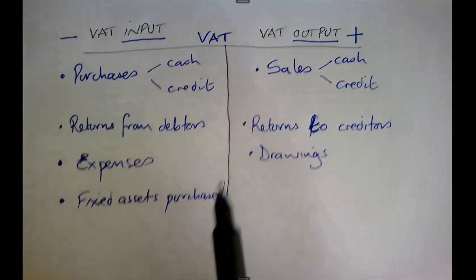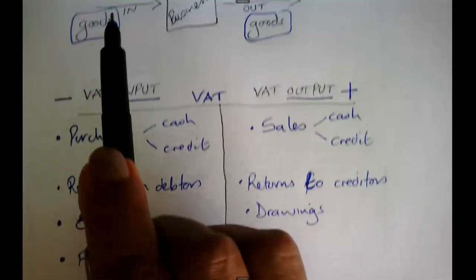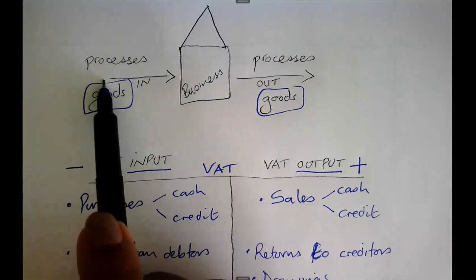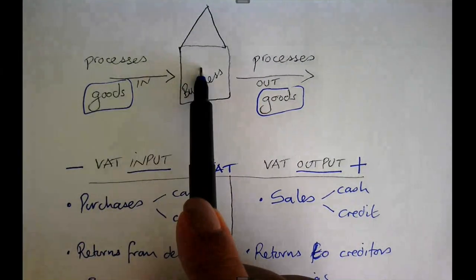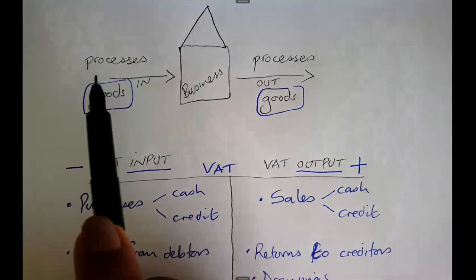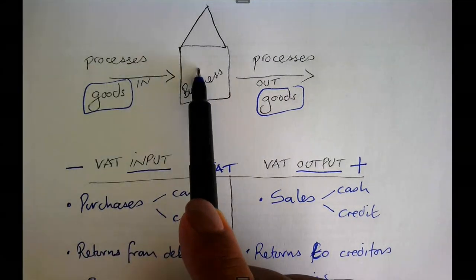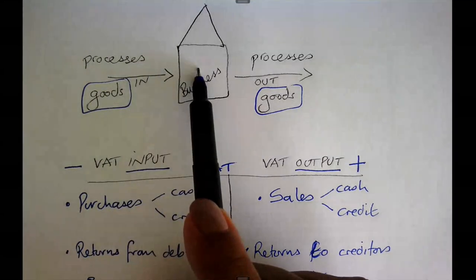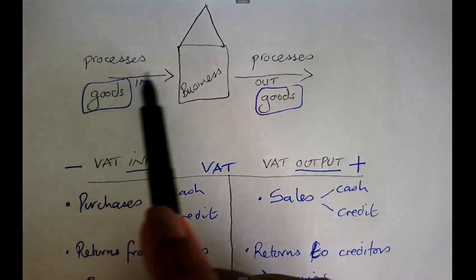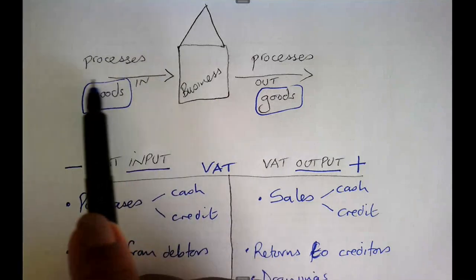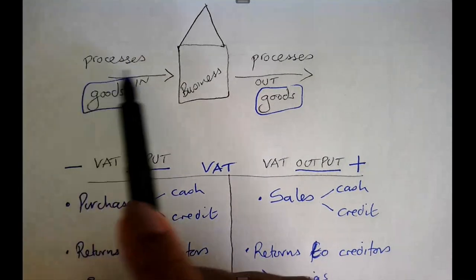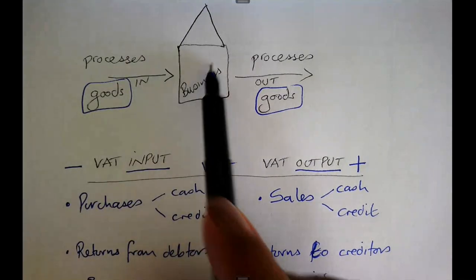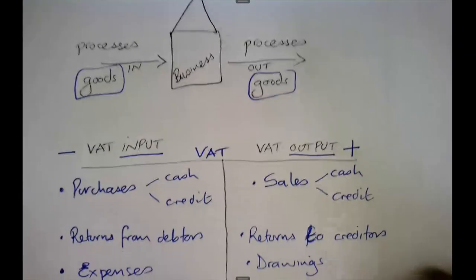Let's look at fixed assets purchased. Is the fixed asset coming into my business? Yes — I'm buying a computer, so a computer is coming in; I'm buying a vehicle, so a vehicle is coming in. When I'm paying for my expenses, the processes are flowing into the business.